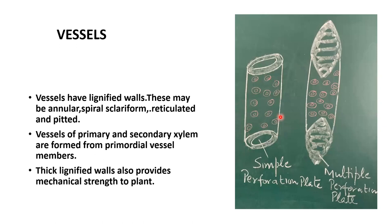The vessel wall also has primary and secondary wall thickenings. Like tracheids, vessel walls can show annular, spiral, scleriform, reticulate, and pitted thickening — simple pitted or bordered pitted. These thickenings present on the vessel wall as well as on the tracheid wall also provide mechanical support.